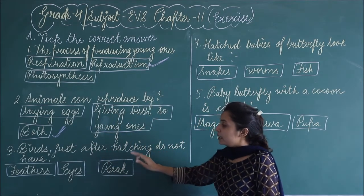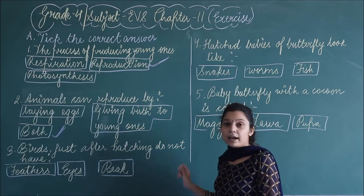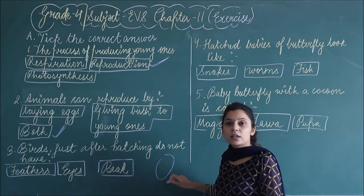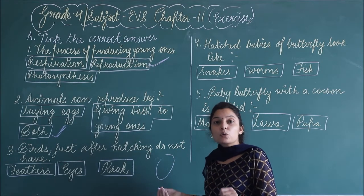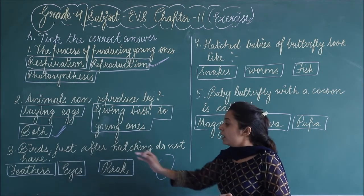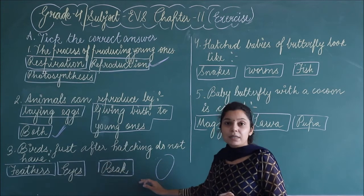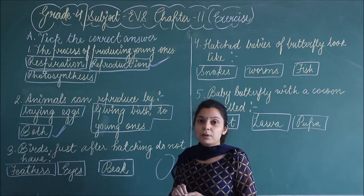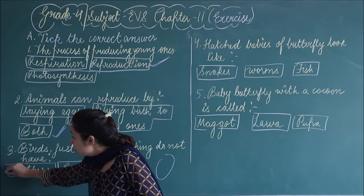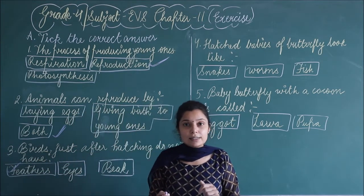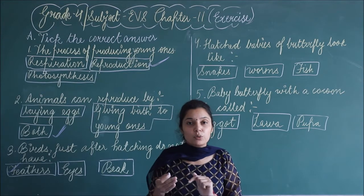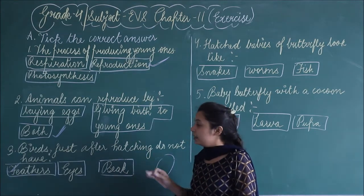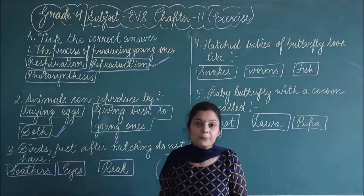Third question: birds just after hatching do not have — jab egg hatch out karke baby bird bahar nikalta hai, toh uske paas kya nahi hota? Options are feathers, eyes, or beak. Eyes and beak are already present. The young baby bird does not have feathers and cannot fly. As it matures, its feathers develop and finally it can fly. But when it comes out of the egg, they do not have feathers.